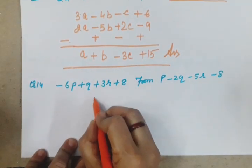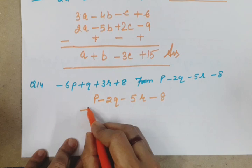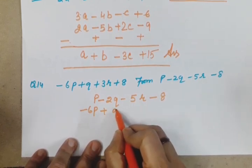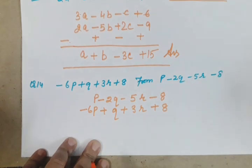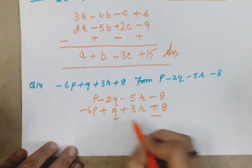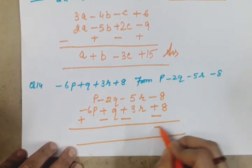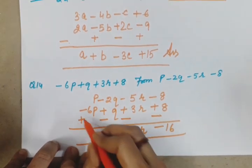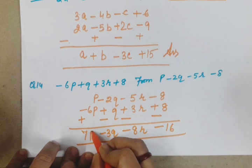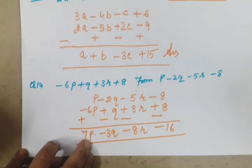Question 14 also by column method. From ke baad wali value upper: 6p -2q -5r -8. P ke niche p ki value -6p, q ke niche +7q, r ke niche 3r, constant value ke niche constant. Remember we have to subtract, so all symbols will change. -8 -8, -16. -5r -3r, -8r. -2q -1q, -3q. +6p +1p, 7p. So 7p -3q -8r -16, this is your answer.